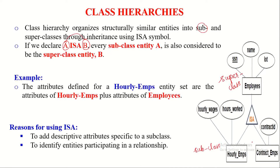These three entity sets are connected through the ISA symbol, indicating that employees is the parent entity set and hourly and contract employees entity sets are child class entity sets. It can be read like this: 'Hourly employees is an employees.' The meaning of this is that every entity in the hourly employees entity set is also considered to be an entity of the employees entity set in an organization.